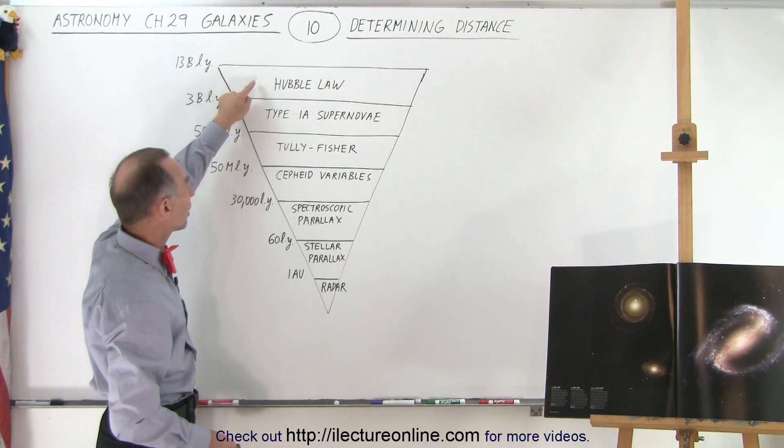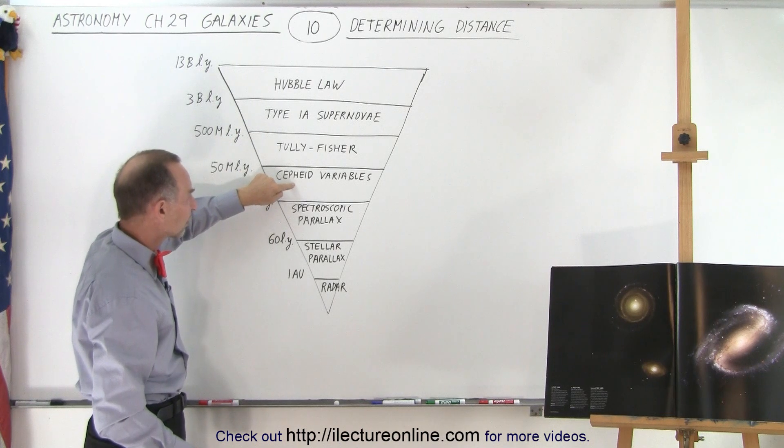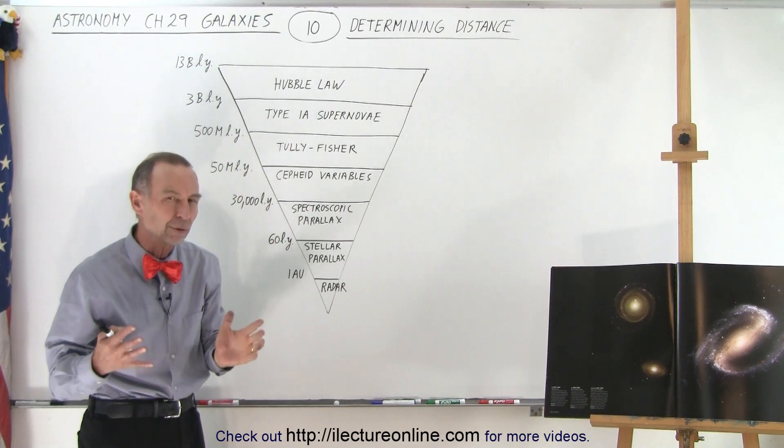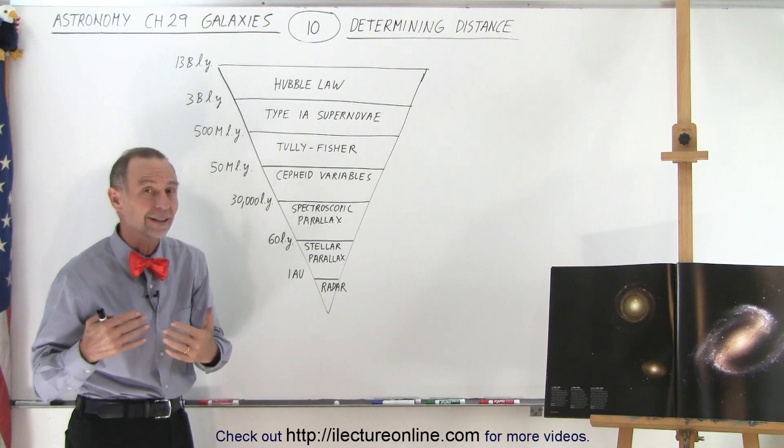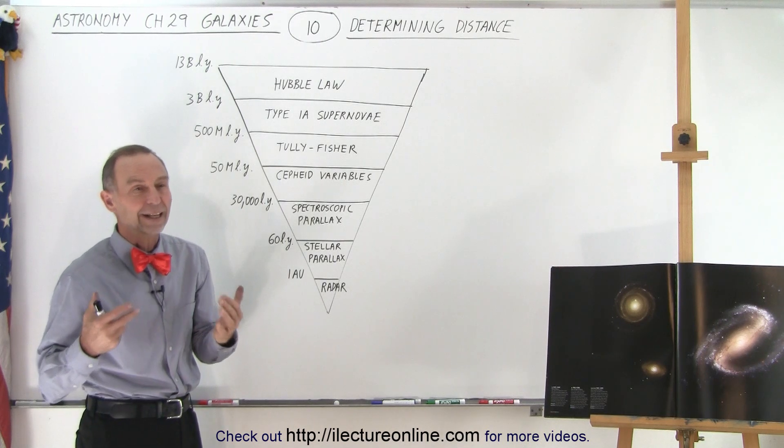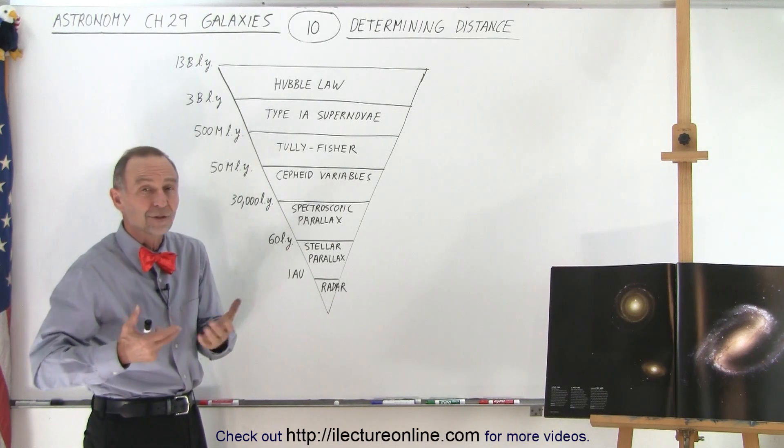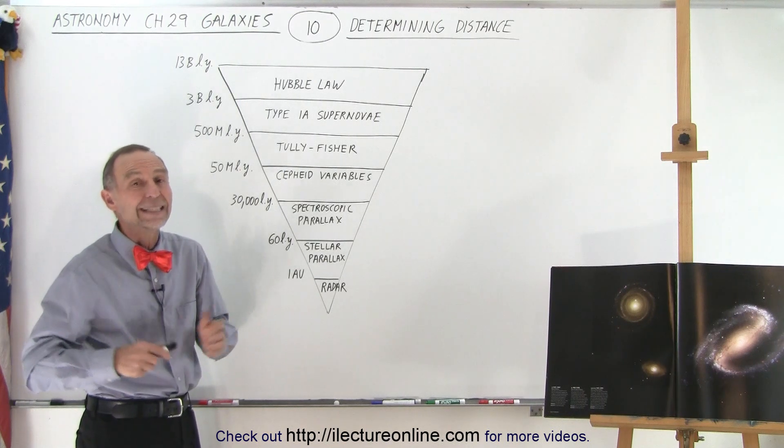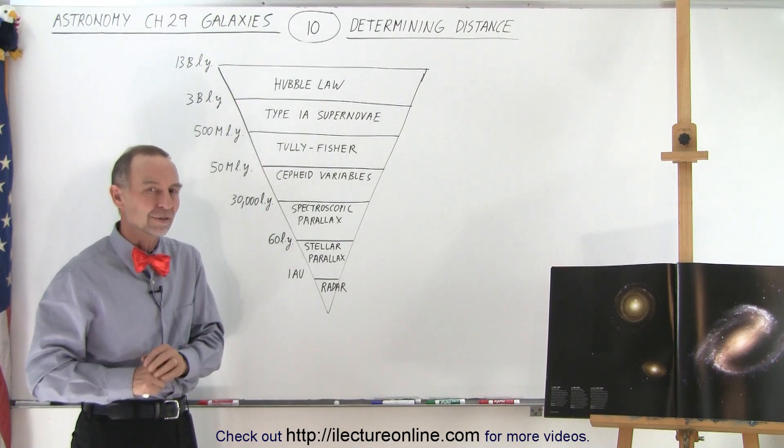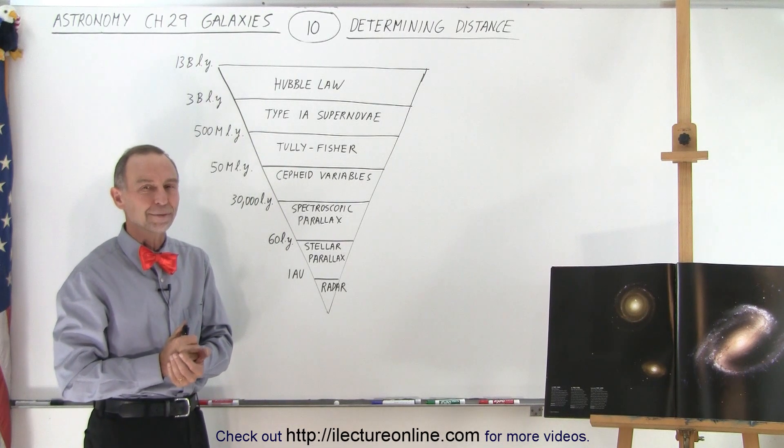So the top three methods are Hubble law, Type 1a supernova, and Tully-Fisher, and for closer galaxies, the Cepheid variables. These are the three to four methods used to find distances to galaxies. But don't think it's an easy task. For many galaxies we know an approximate distance, and sometimes the uncertainty may be as much as 10 or 20%, because it's very difficult to get accurate values. But that is how it's done, and here are the various means by which it's done.